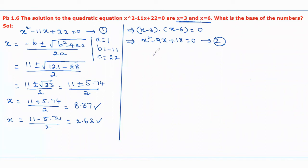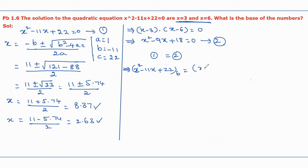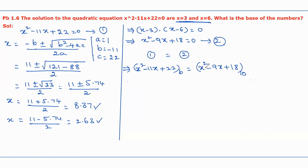Now we equate equations 1 and 2. This gives x squared minus 11x plus 22 with base b equal to x squared minus 9x plus 18 with base 10. We compare these two quadratic equations with their corresponding base values.